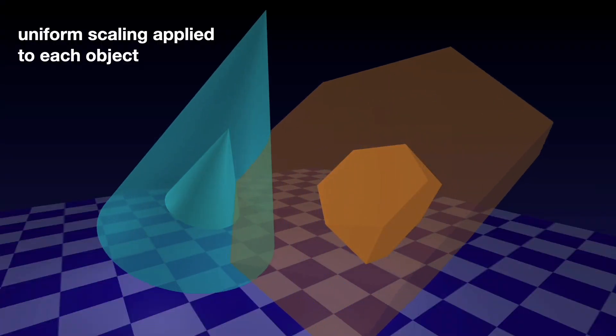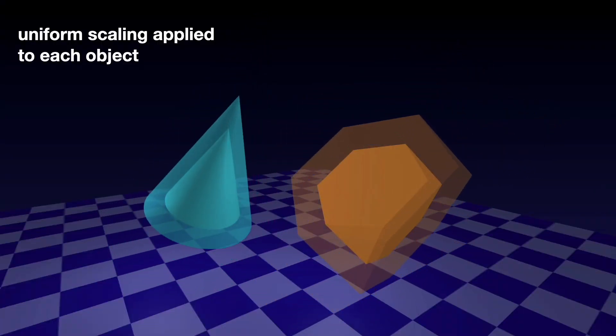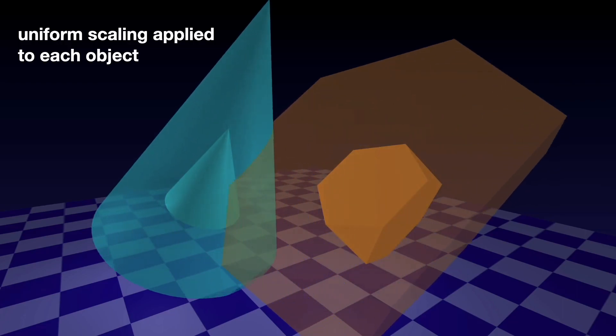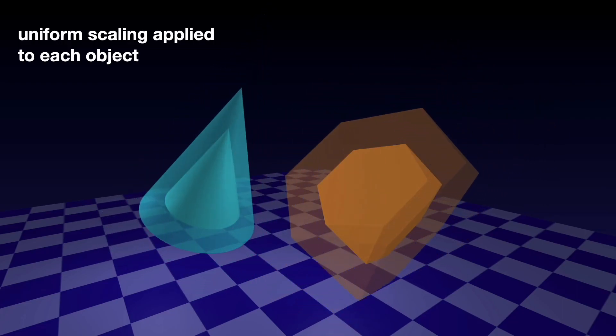DCOL is based on uniform scalings applied to each object, as shown here. For a uniform scaling greater than 1, the objects grow, and for a scaling less than 1, the objects shrink.